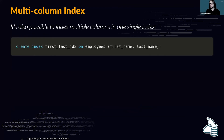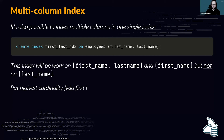It is also possible to index multiple columns in one single index. For example, you can create an index on both first_name and last_name. This index works when searching by first_name and last_name together, or by first_name alone. However, if you only search by last_name, the index cannot be used — because multi-column indexes always work from left to right.